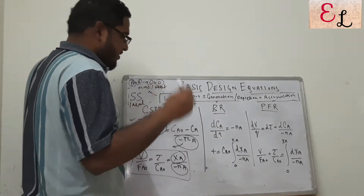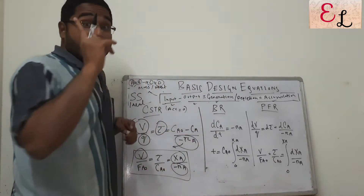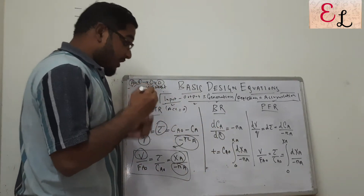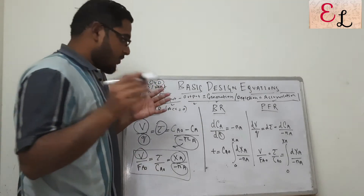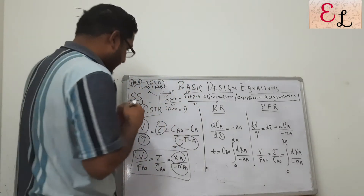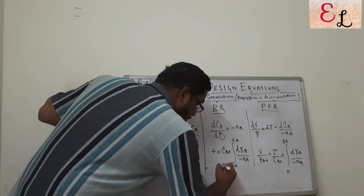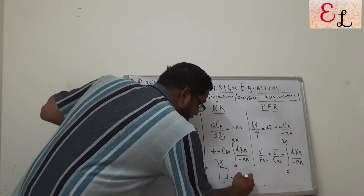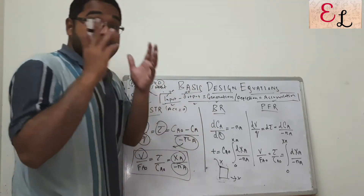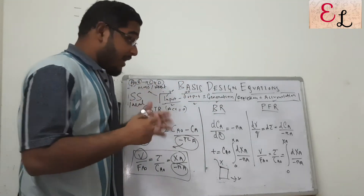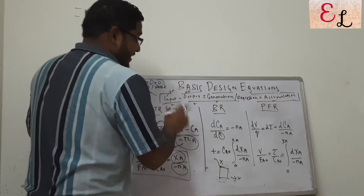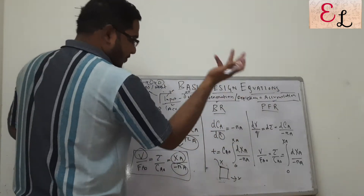Now talking about the batch reactor — the equation is very simple to derive. A batch reactor is a non-steady-state process because concentration changes over time, so there is a time term associated with it. It has no input and no output — it is a closed structure. Some reactants are placed in the reactor and given time to react among themselves; concentration is measured and monitored over time.